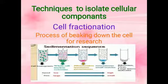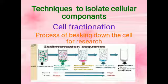Cell fractionation is a process of breaking down the cell for research, for getting different organelles inside the cell. We can say isolation of cellular components to study their chemical composition is called cell fractionation. For example, if someone wants to research on ribosome, through this technique, pure ribosome is obtained. In cell fractionation nowadays, the process being used is centrifugation.